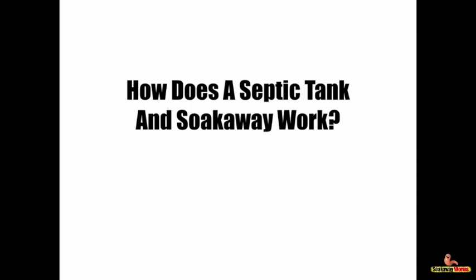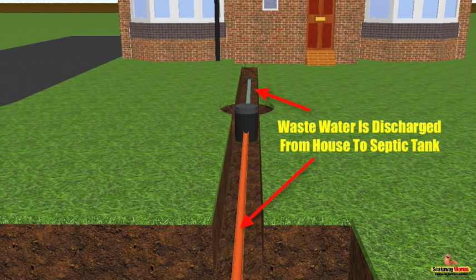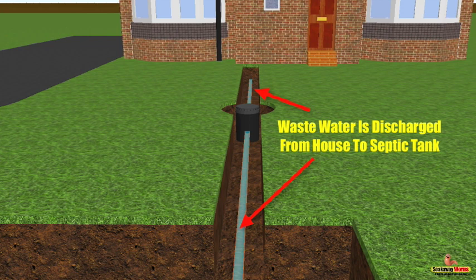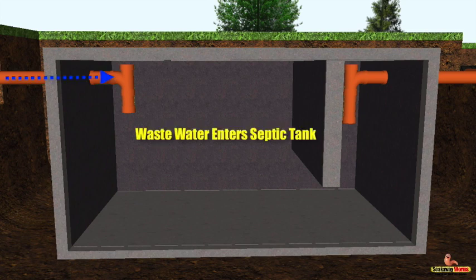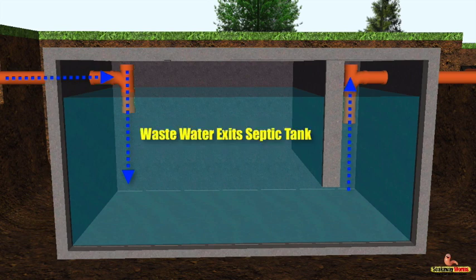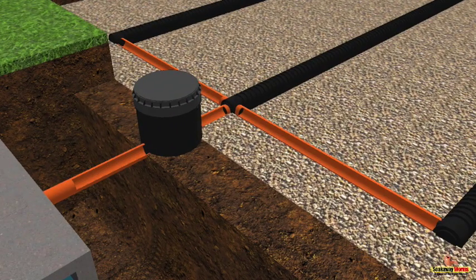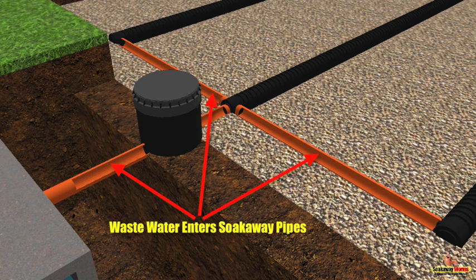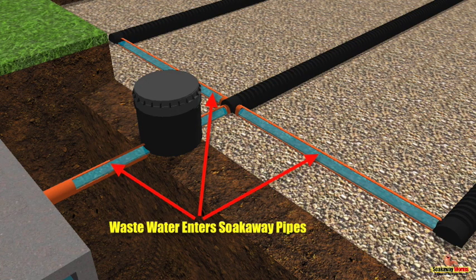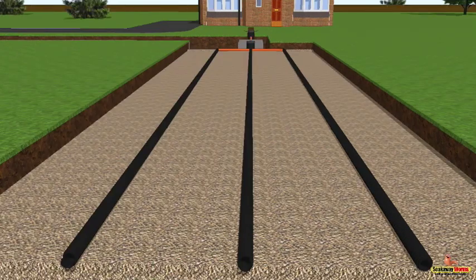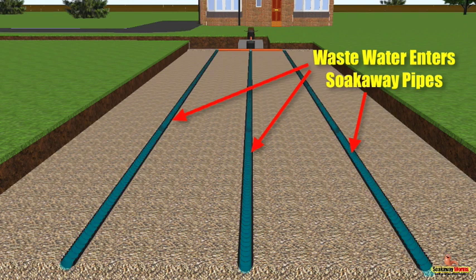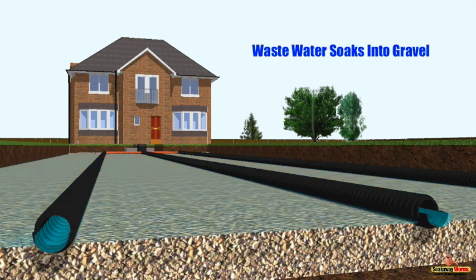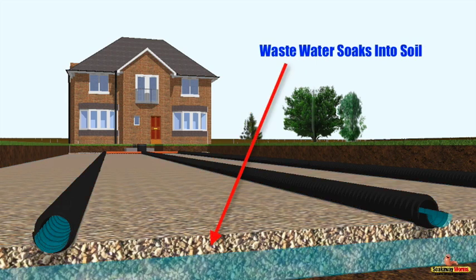How does a septic tank and soak away work? It's quite simple. Wastewater is discharged from a property towards the septic tank. The wastewater then enters the septic tank from the house, fills up and exits via the outlet pipe. The wastewater then leaves the septic tank and enters the soak away system, making its way through the soak away pipes, where it's slowly but naturally discharged into the gravel and soil.